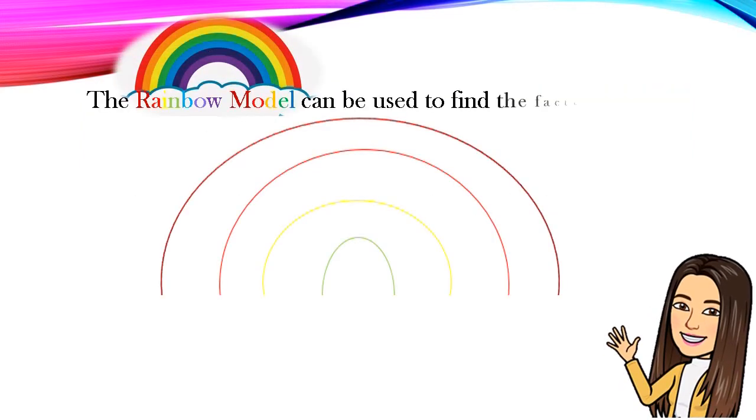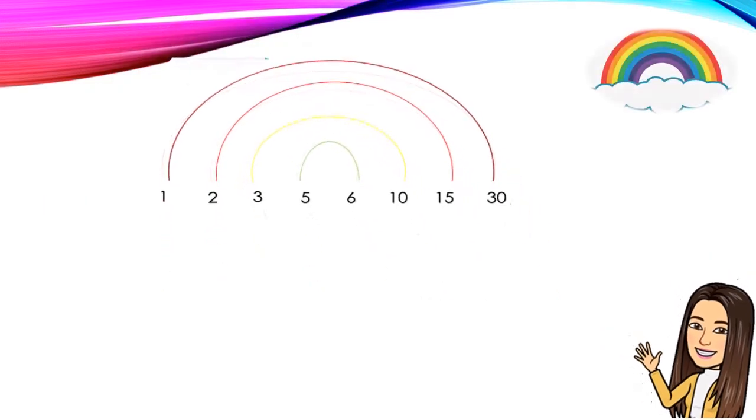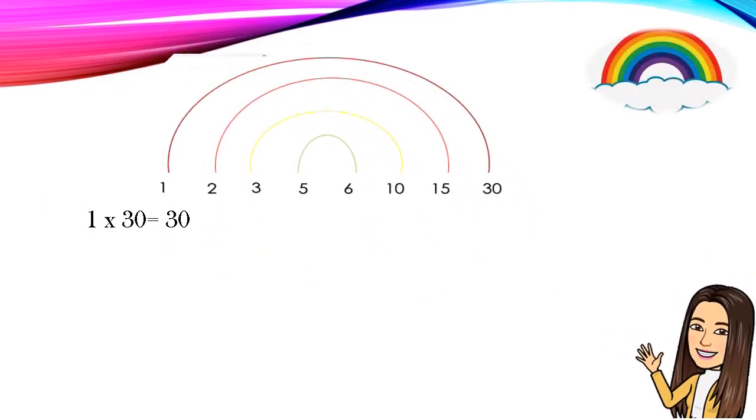The rainbow model can be used to find the factors of 30. Example: 1, 30, 2, 15, 3, 10, 5, and 6. 1 times 30 equals 30. 2 times 15 equals 30. 3 times 10 equals 30. 5 times 6 equals 30.